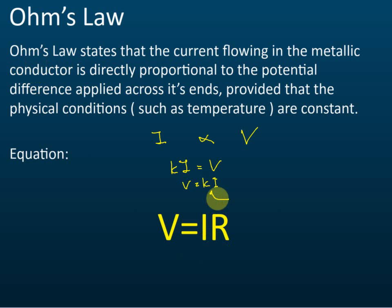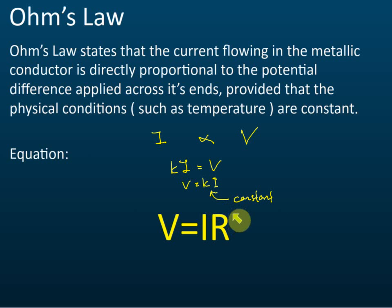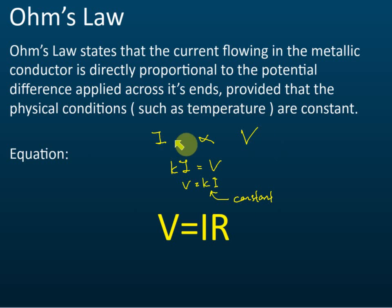K is the constant. That is the relationship between current and potential difference: higher potential difference means higher current, and they are directly proportional. This is given by Ohm's law.